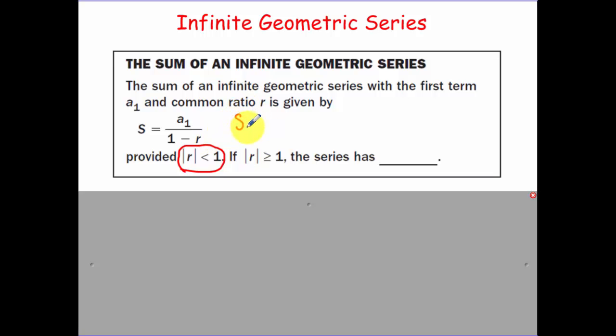Remember how the sum of the nth terms was a sub 1 times 1 minus r to the n over 1 minus r. Now let's think about as n gets really big and r is a fraction, what could happen to that?